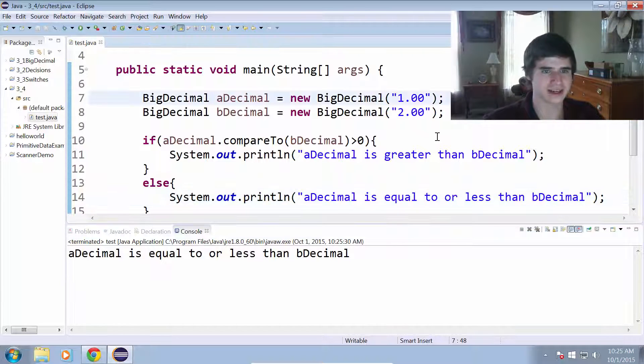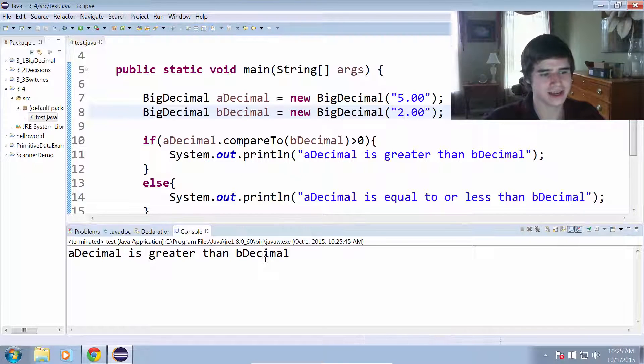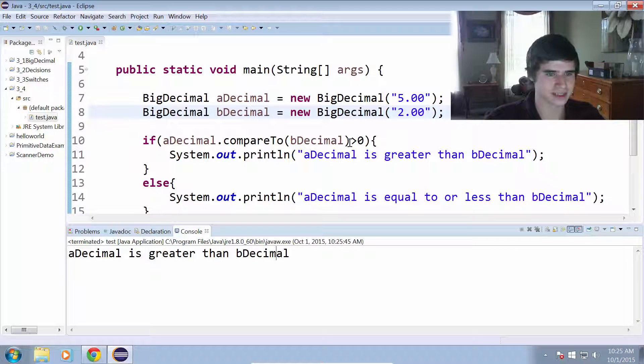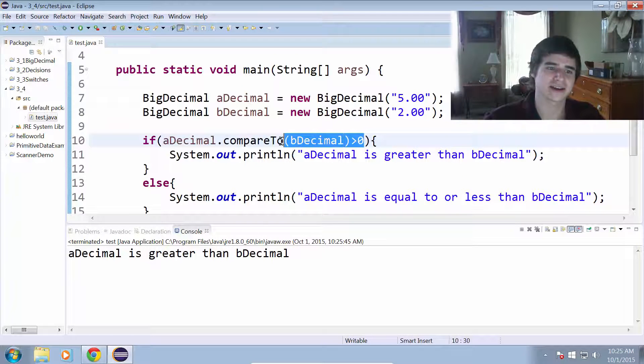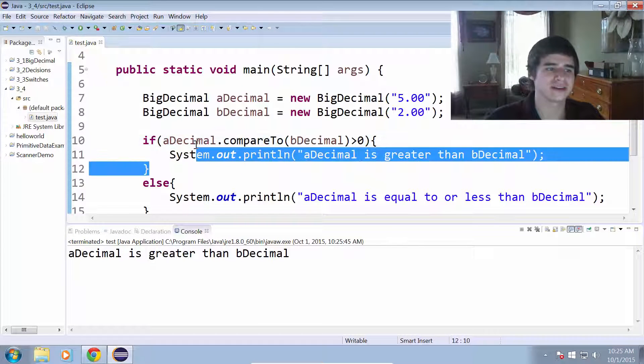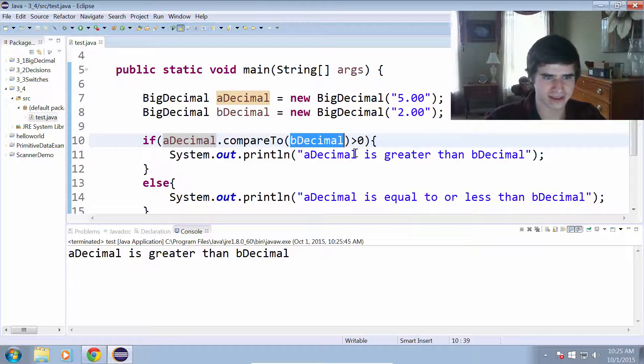Now if we change the value of aDecimal to five, and we leave bDecimal at two, we run that, and it'll say aDecimal is greater than bDecimal, because in this case, it will return a value of positive one. That's greater than zero, and we know that the first decimal is greater than the second decimal.